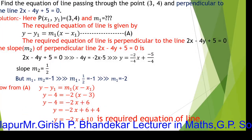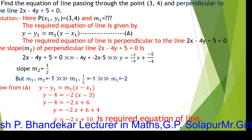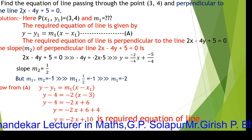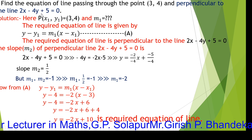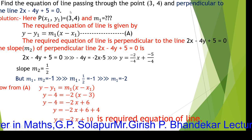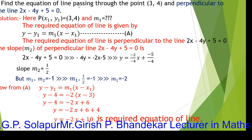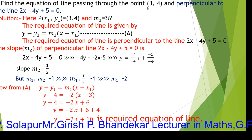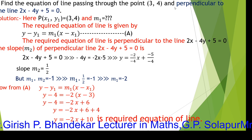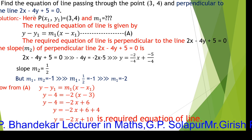Next question: find the equation of a line passing through the point (3, 4) and perpendicular to the line 2x minus 4y plus 5 equals 0. We need to find the equation of a line which passes through the point (3, 4) and is perpendicular to the given line.